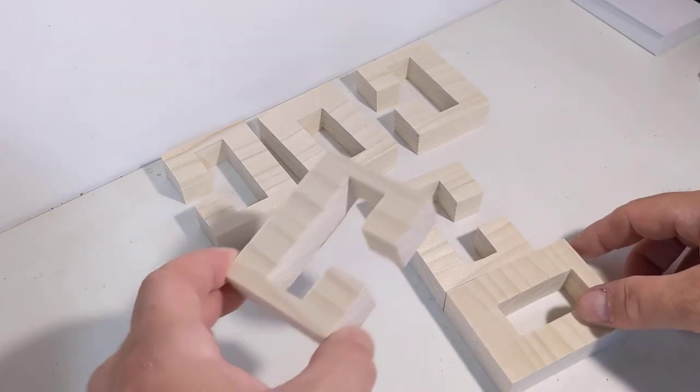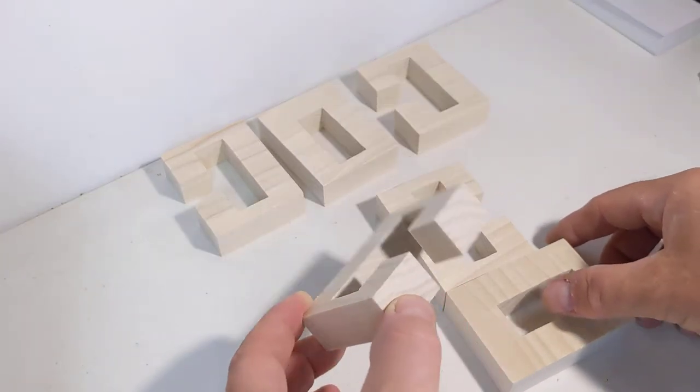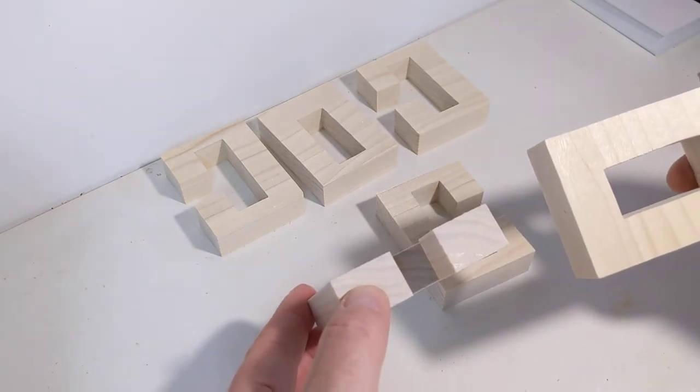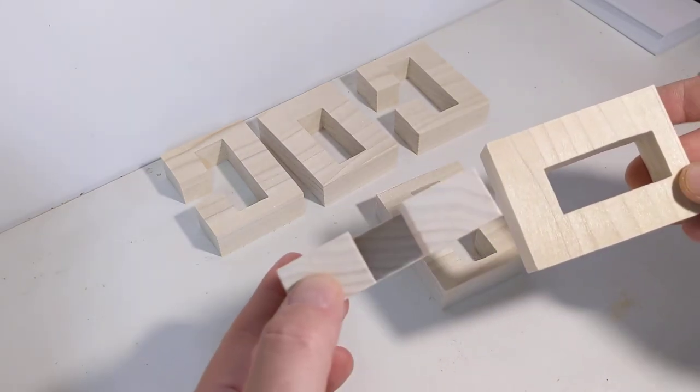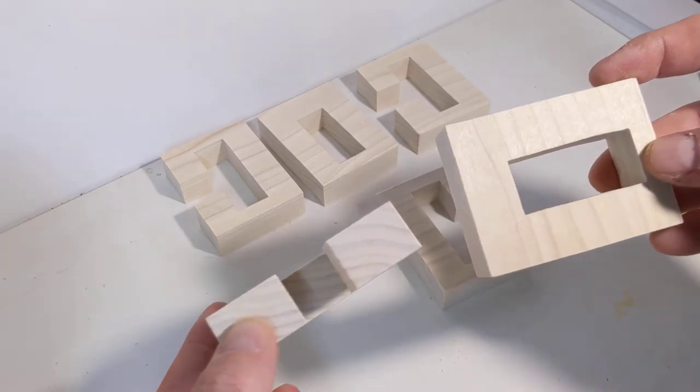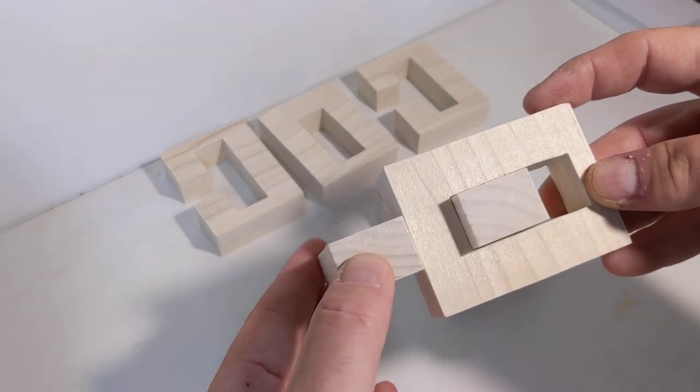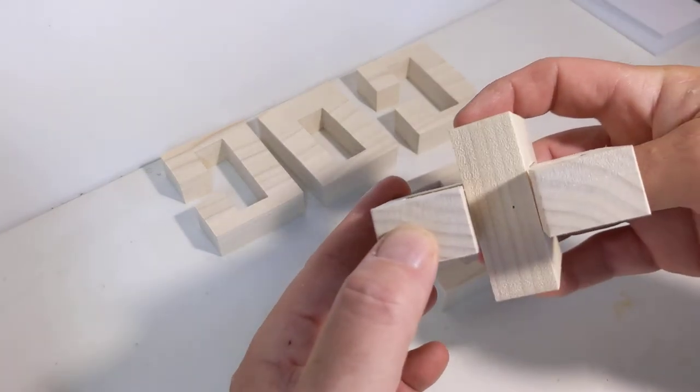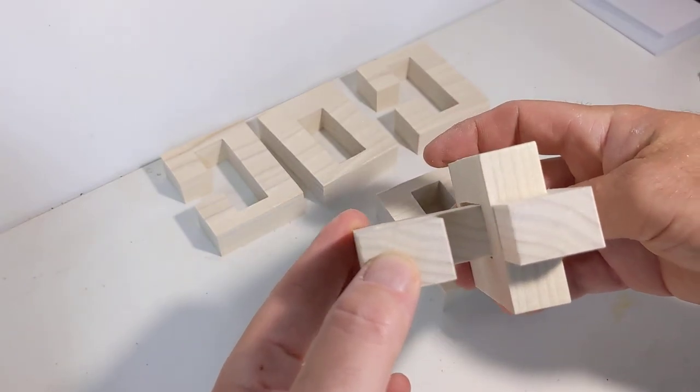To get it put back together again, you're going to take one of the C shapes with one of the O. Notice that it's fatter on one end versus the other. Slide it in the fat end, rotate it, slide it over.